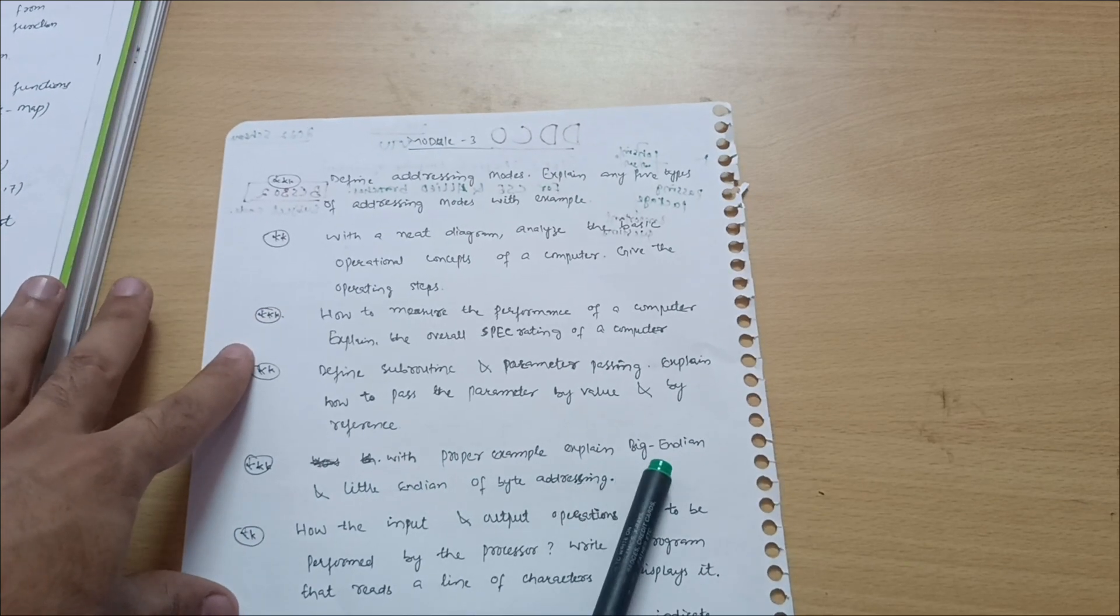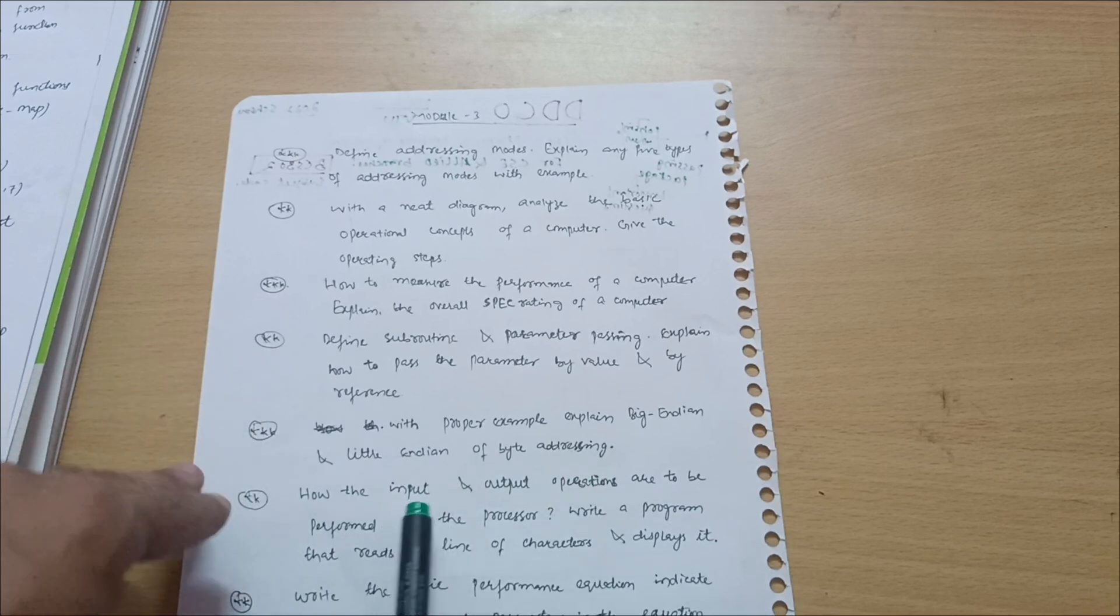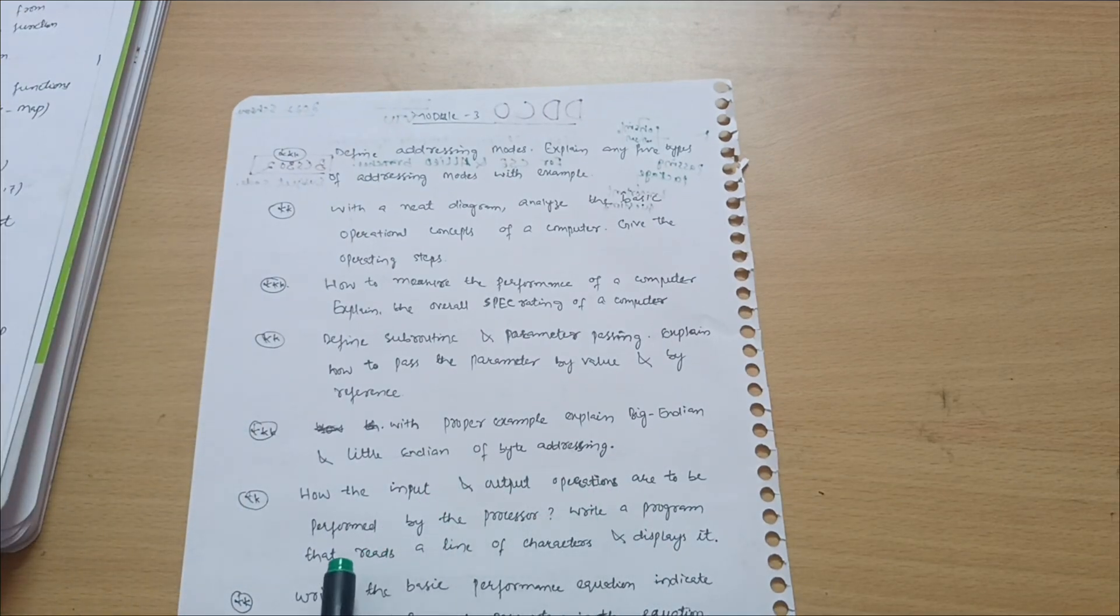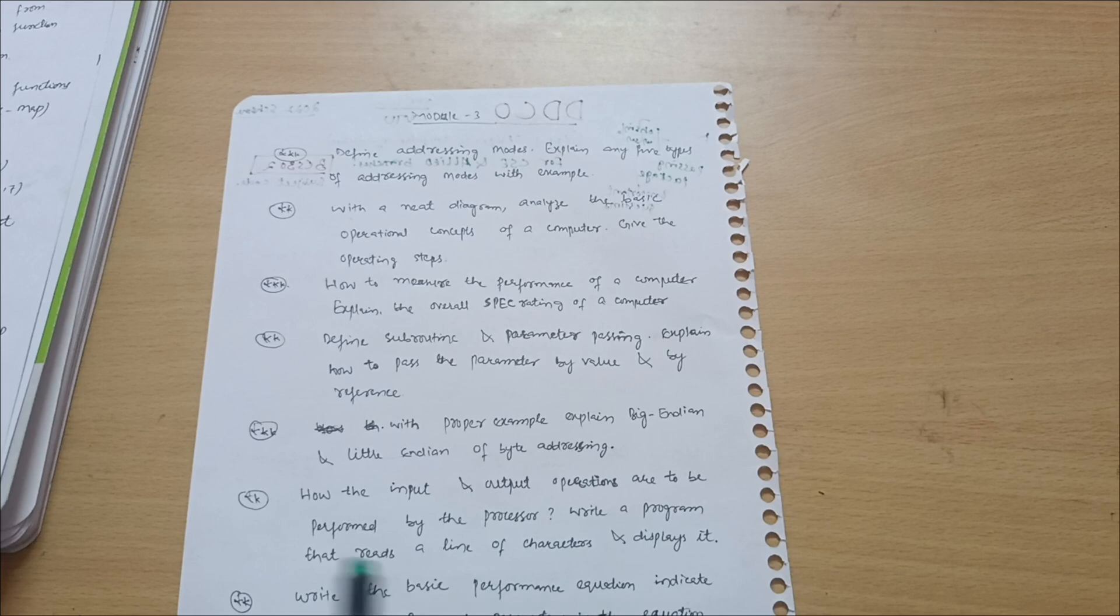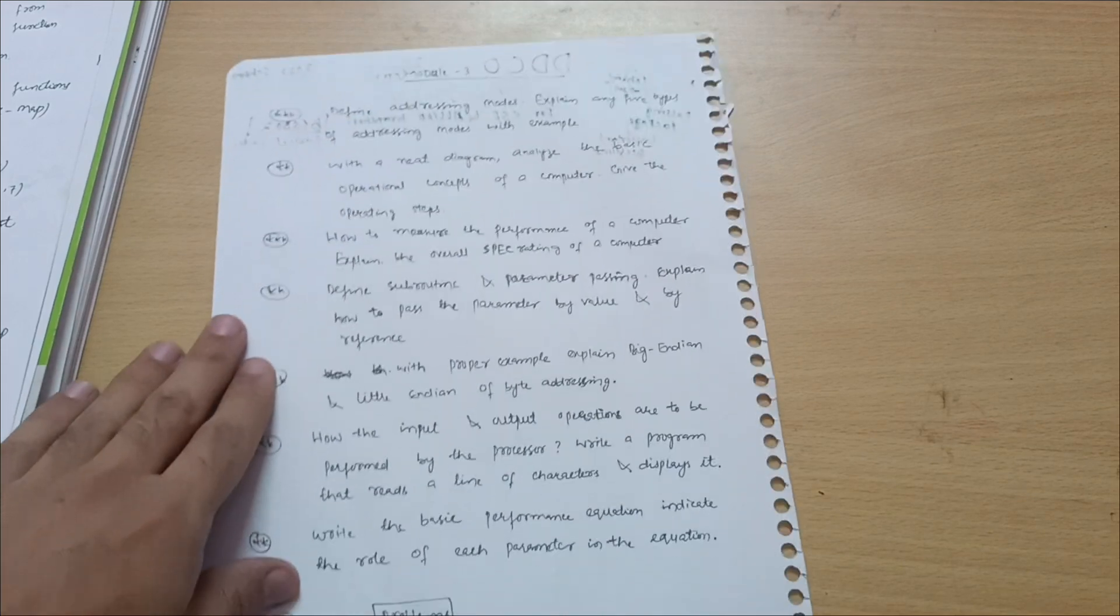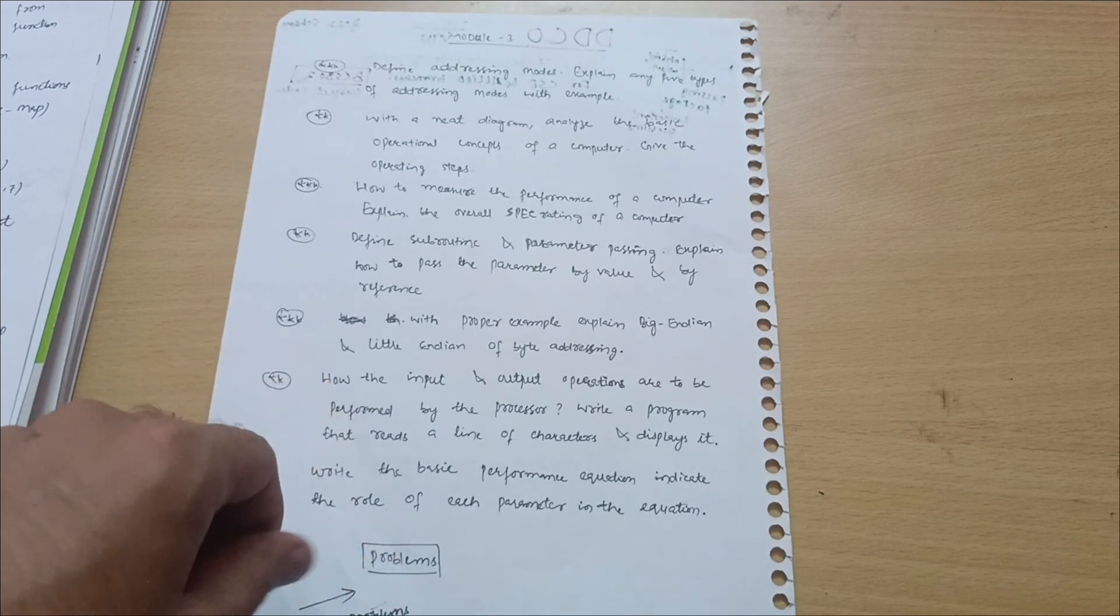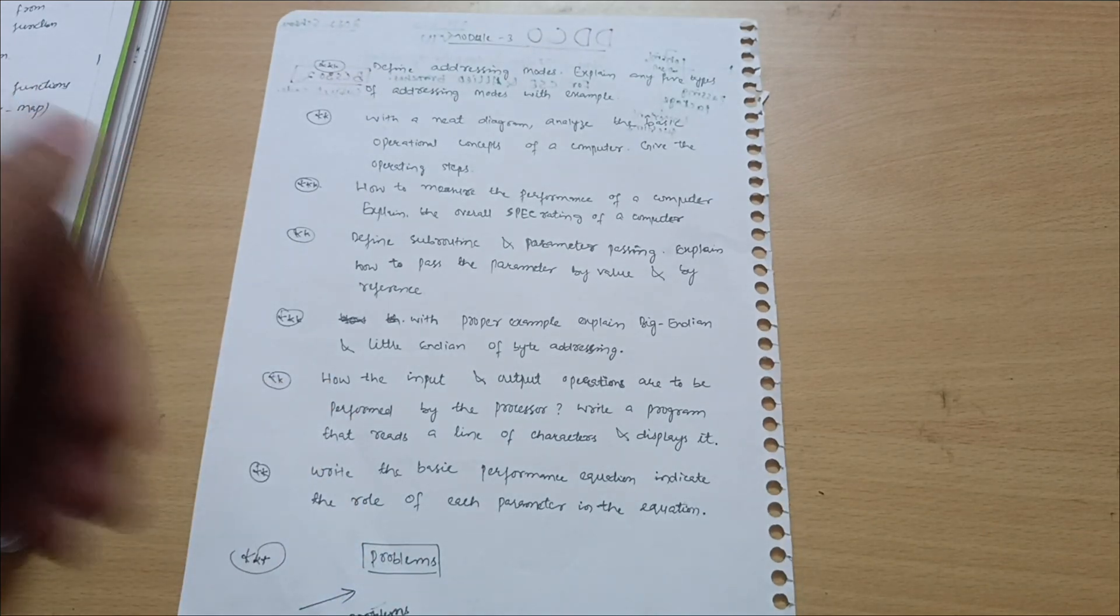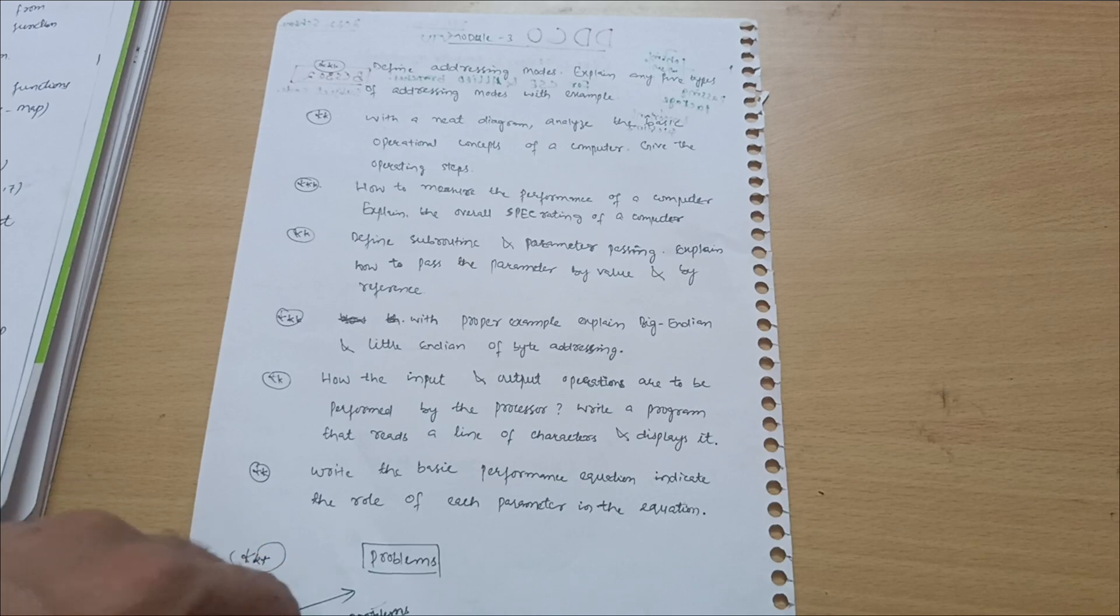With the proper example explain Big Endian and Little Endian of byte addressing. How the input and output operations are to be performed by the processor? Write a program that writes a line of characters and displays it. Write the basic performance equation, indicate the role of each parameter in the equation. This is all about the theory part of module third. For practice, as I mentioned, you have to go for the previous year question papers of the 18 scheme and 2021 scheme, as there is unavailability of the papers for the third sem.